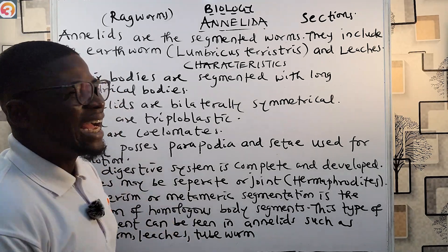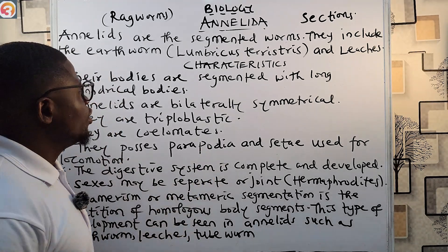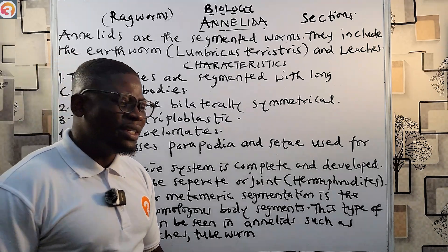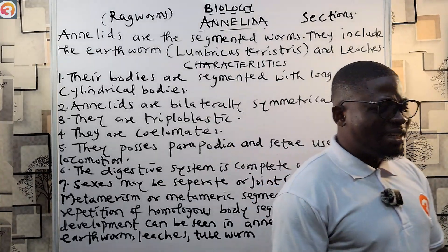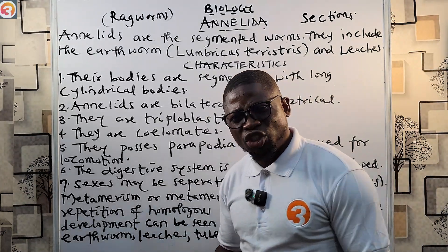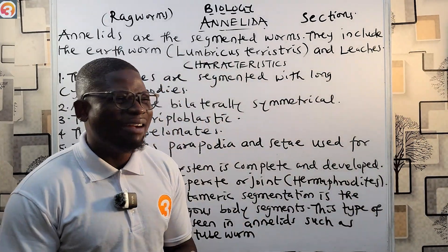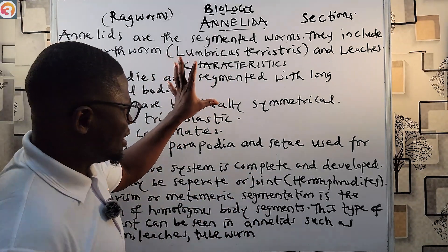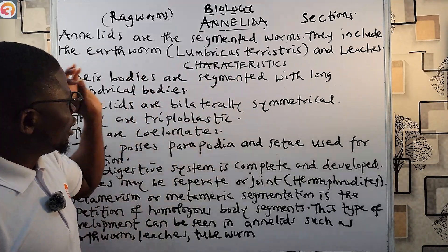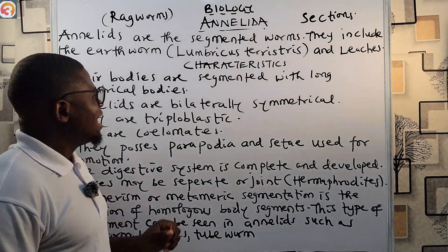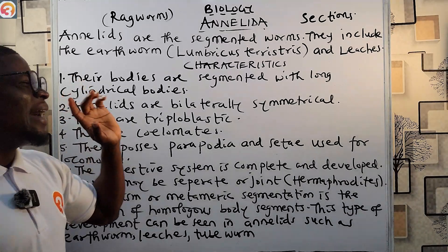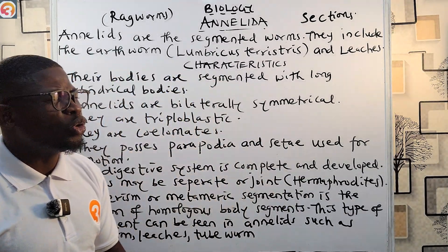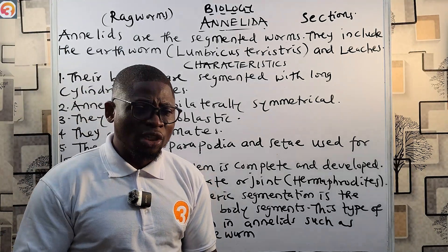Now let's look at their characteristics. Number one, their bodies are segmented with long cylindrical bodies — their bodies are usually shaped in the form of a ring. Number two, annelids are bilaterally symmetrical.